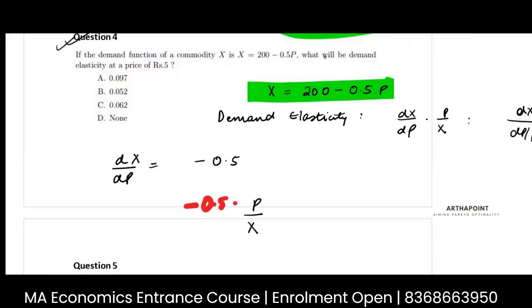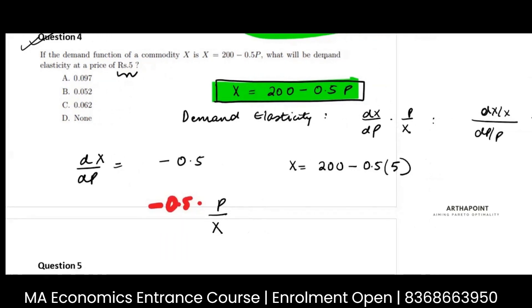Now P is given to you as 5. So in this function I will put P as 5. When I put P as 5, what will I get? What will my X be?